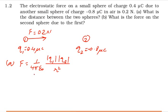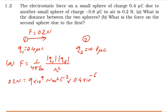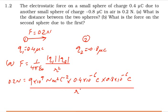Substituting values: force is 0.2 Newton, the constant factor is 9 × 10⁹ N·m²/C², the first charge is 0.4 × 10⁻⁶ coulomb, multiplied by the magnitude of the second charge 0.8 × 10⁻⁶ coulomb, all divided by r², which I have to calculate. Taking r² to the left-hand side.